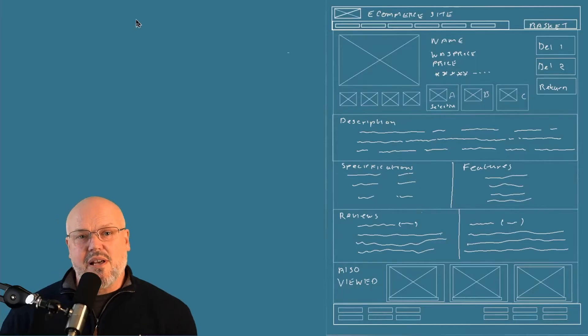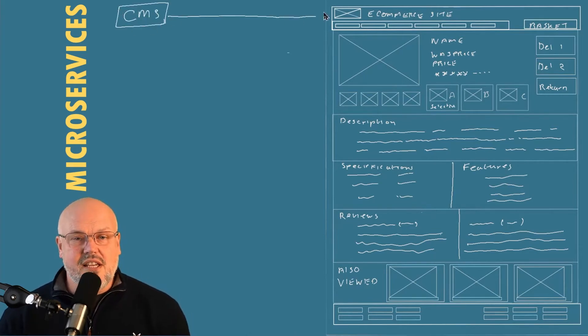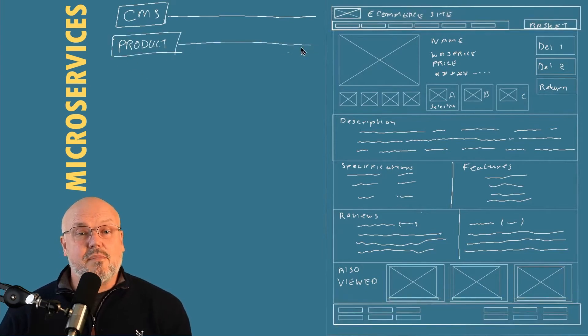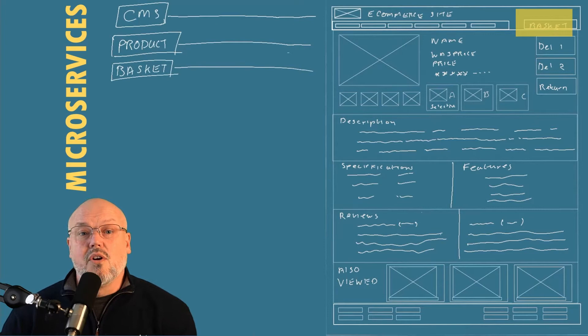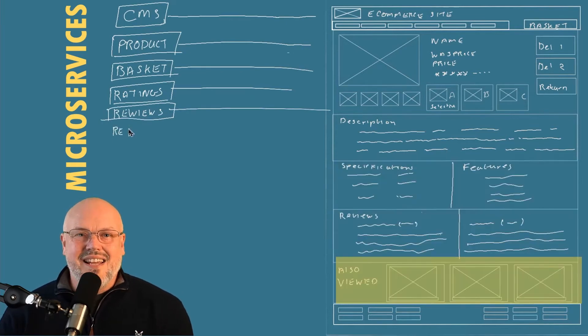To understand the issues that GraphQL solves, let's take a look at a hypothetical product details page from an e-commerce platform. Let's assume this product details page is built from microservices. When the page is first retrieved, it will make calls to the CMS to get the header and the footer, it will call the product service to get the basic product data, it will call the basket API so you know what the status of the basket is, and at the same time it will call the ratings microservice and the reviews microservice.